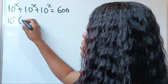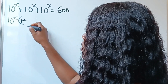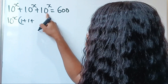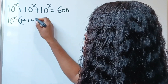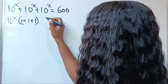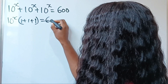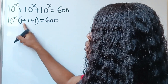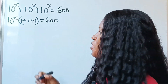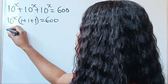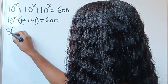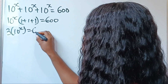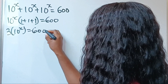When this divides this, we have 1. When this divides itself, we still have 1. When this divides itself, we have 1. It's equal to 600. So we have 1 plus 1 plus 1, which gives us 3. This simply means 3 multiplied by 10 to the power of x is equal to 600.